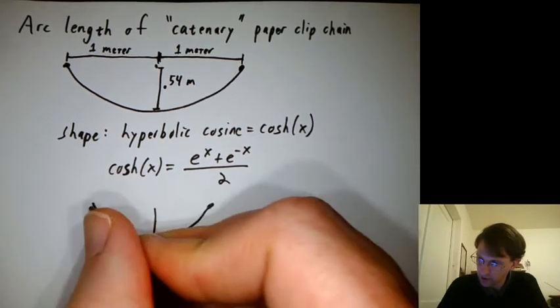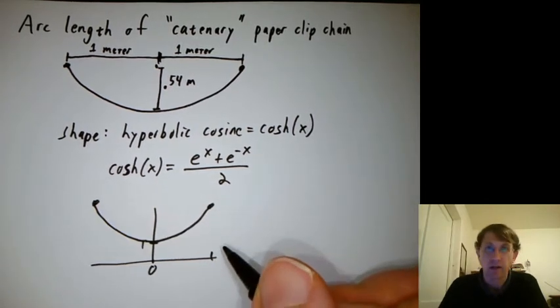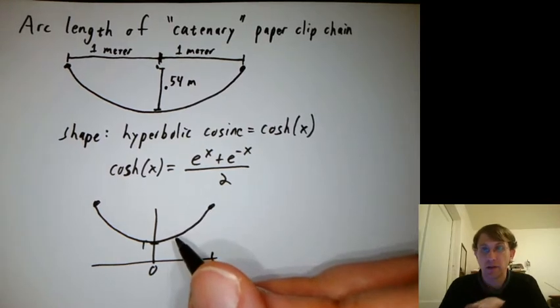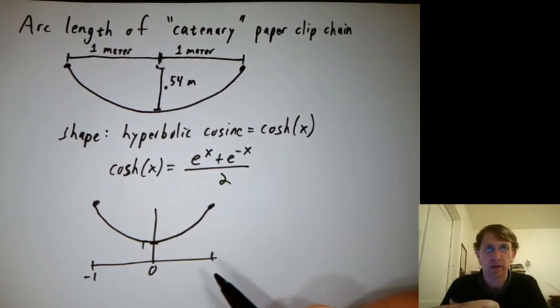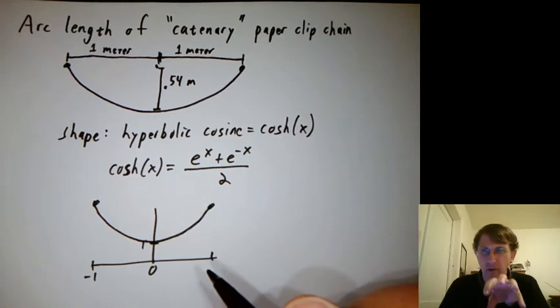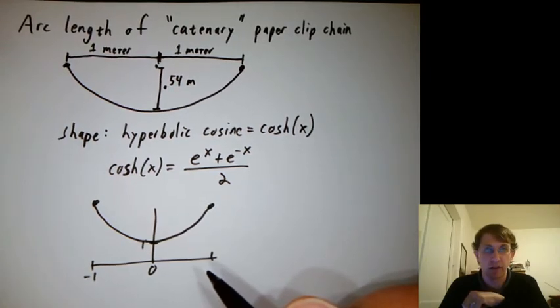It looks kind of parabolic, and if you zoom in enough, it definitely looks parabolic. That's kind of the big point of calculus, right? The more you zoom in, the more things look linear. Zoom out a little bit, maybe they look parabolic. We'll talk about that in a later chapter.